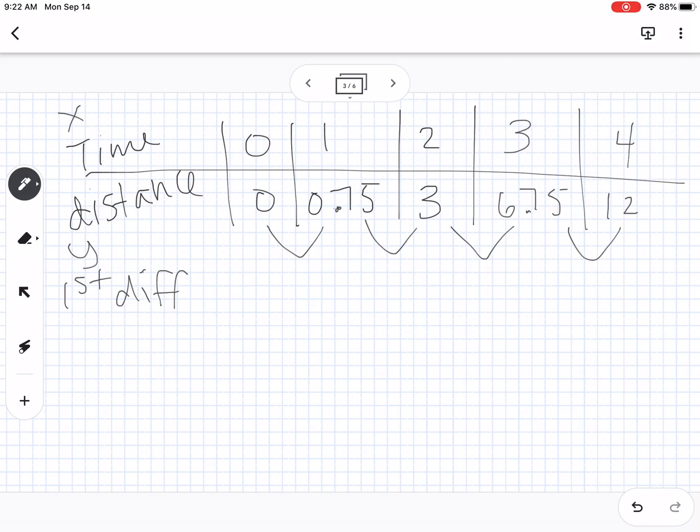So the first difference, we get 0.75, we get 2.25, 3.75, and 5.25. So right there, if all of those numbers had been the same, that means we're increasing by the same number each time, and that would tell us that it was linear. So if all of those first differences were the same number, then this function would be linear, and we would be looking for a line to model it.